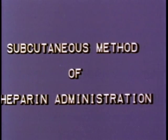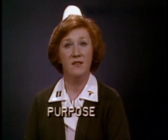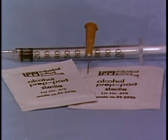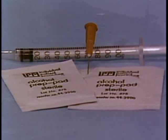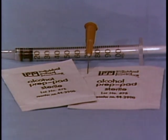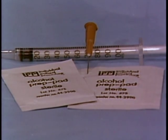Subcutaneous method for administering heparin. When prolonged therapy is indicated, heparin may be given subcutaneously, directly into the fatty tissues. Assemble the following items: a one or two milliliter syringe, a 26-gauge needle no longer than five-eighths of an inch — the needle should be fine and sharp — and alcohol swabs, because the skin should be antiseptic.